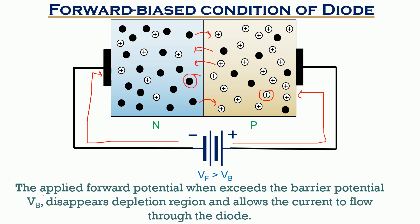When the applied forward potential exceeds the barrier potential, this allows the depletion region to get diminished and the flow of current through the device to take place.